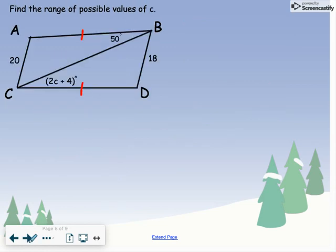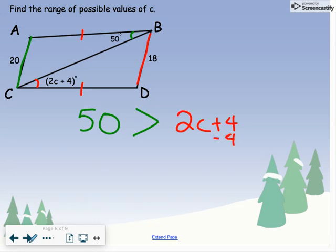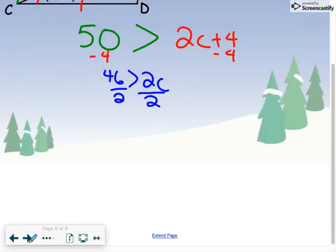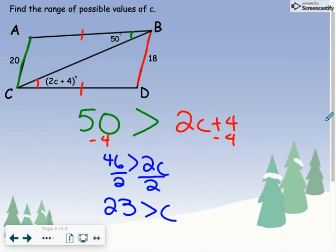Last one here. We have these two angles. We look at the sides that are across from them - 20 across from a 50-degree angle, and this angle is across from the side that says 18. We're going to set up an inequality. This angle, since it's across from the larger side, is going to be greater than this angle. So looking here, we're going to subtract 4, subtract 4. We get 46 is greater than 2c, and then we are going to divide by 2. 23 is greater than c.